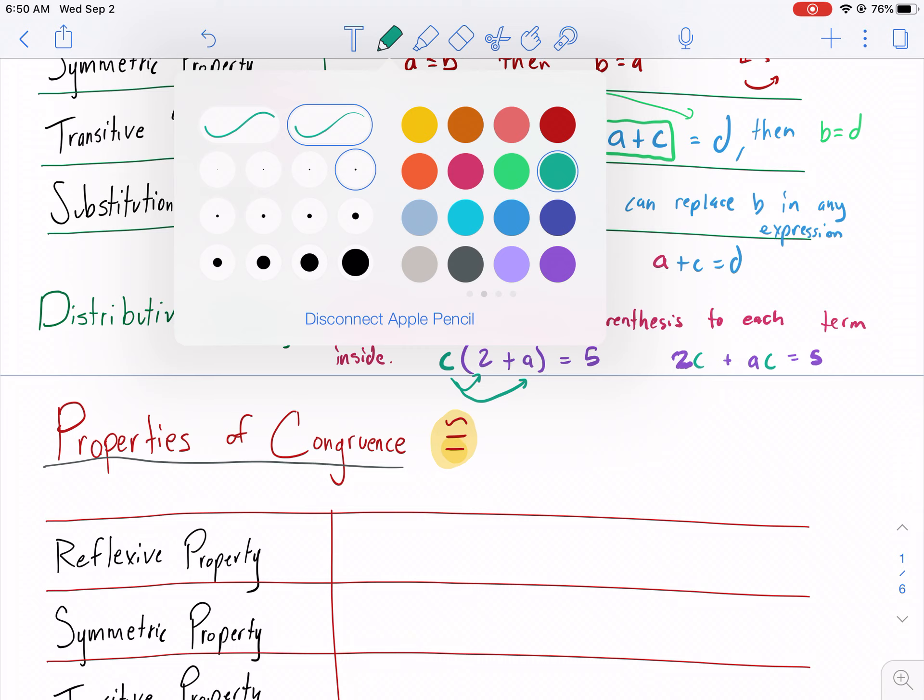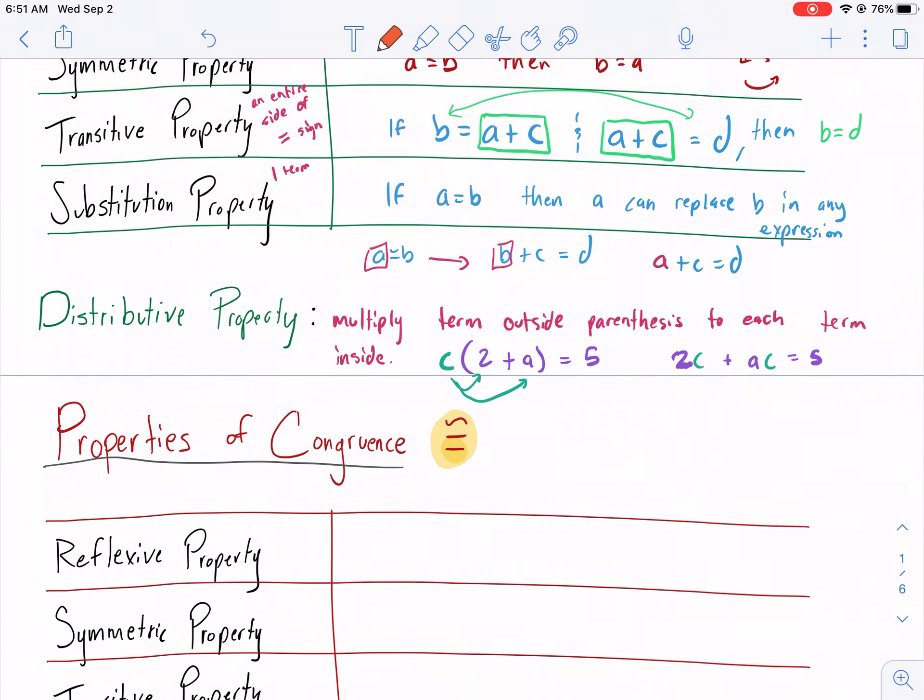So now we have properties of congruence. Now, when you see this symbol here, essentially this is the equal sign for shapes. It means it has the same dimensions, the same angles. So I like to think of it as the equal sign for shapes and angles and lines. Shapes and angles and lines, oh my.